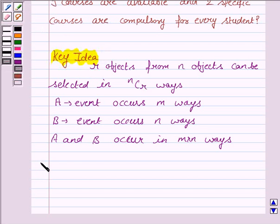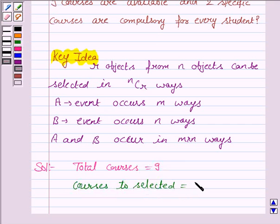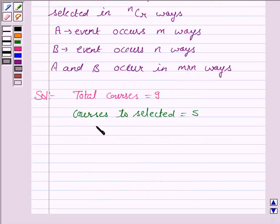Let us now move on to the solution. The total courses are 9, and courses to be selected are 5. Number of compulsory courses is equal to 2.